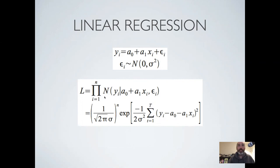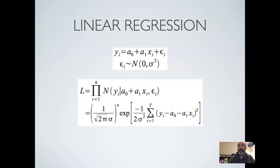Our first step is to write this out in likelihood form. Assuming the errors are independent, the likelihood is the product of all the normal probability densities of the data y given the model — the linear model with parameters for slope, intercept, and variance. This is exactly the same normal likelihood as before, except instead of y_i minus mu we now have y_i minus our linear model: a0 plus a1*x. That really is the only difference between fitting a mean and fitting a linear regression.